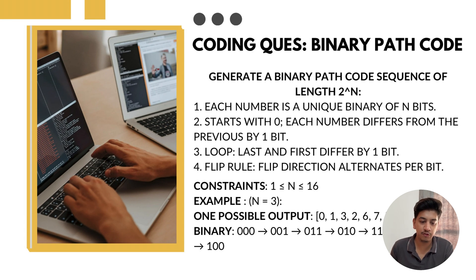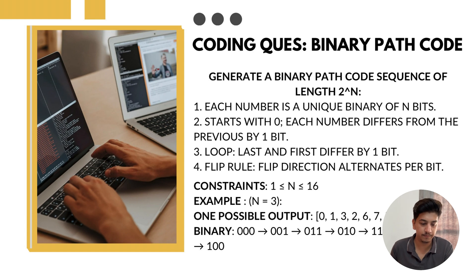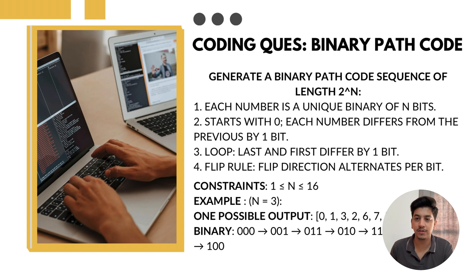The second rule is the directional flip rule: each bit position alternates its flip direction every time — zero then one is ascending, and one then zero is descending. It was a really interesting question, not too hard if you are practicing recursion, bit manipulation, and binary logic.